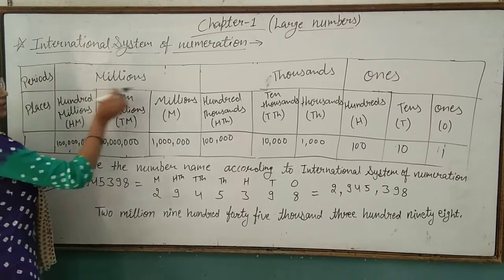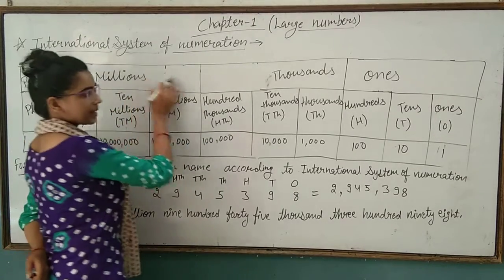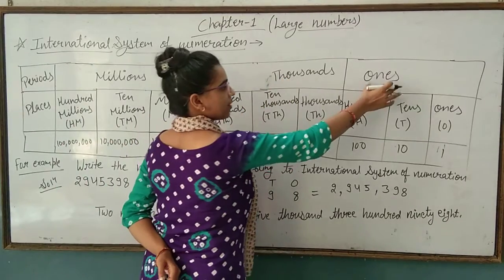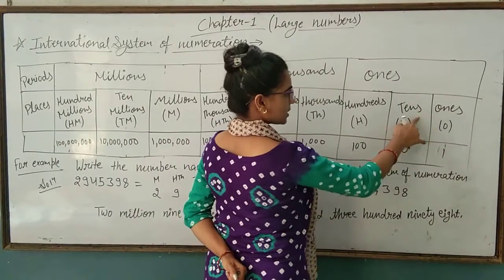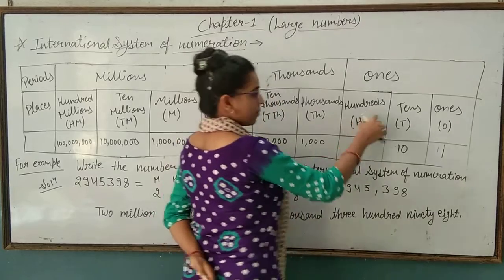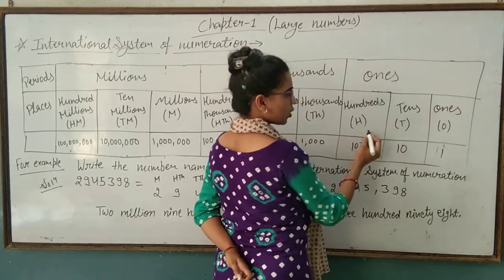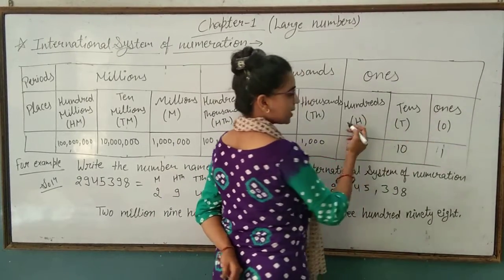First we have periods: ones period, thousands period, and millions period. We start from ones - ones, tens, and hundreds. We will read them together.